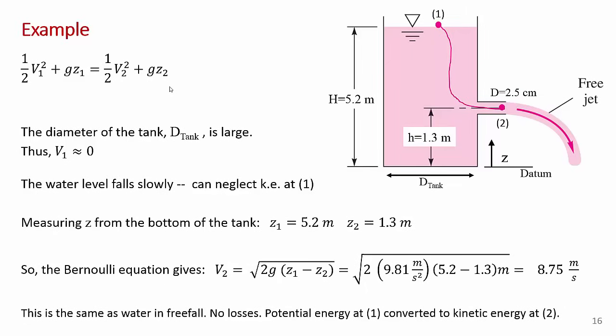Now you're told in the problem that the diameter of the tank is large. So this diameter here is large and the reason you're told that is so that you can come to the conclusion that the level of the tank drops very slowly. So the velocity here, V1 is going to be small. If you were told the diameter of the tank, you could actually calculate the velocity at one.